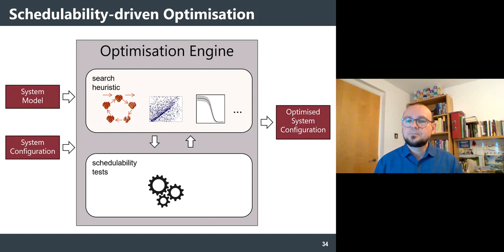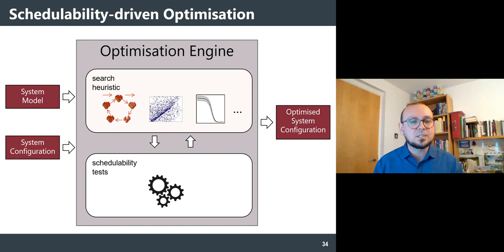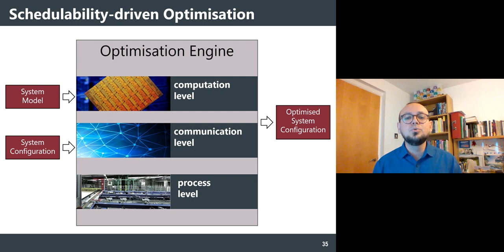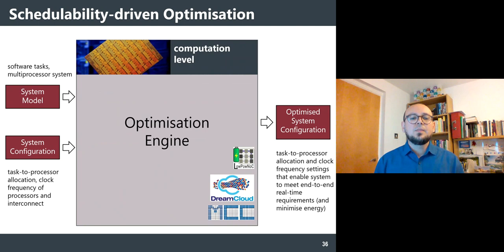We have used schedulability tests to optimize systems at computation, communication, and process levels. To do that, we have either reused or created schedulability tests for all those kinds of problems and used them to guide an optimization engine towards optimized system configurations. We will now go through examples of each.